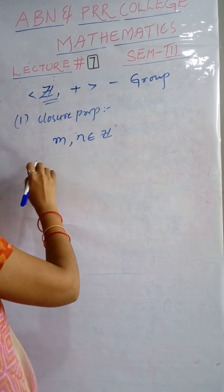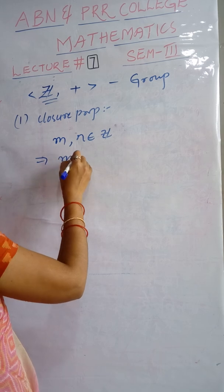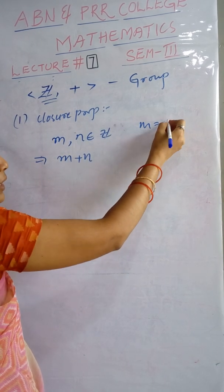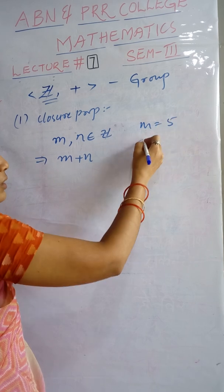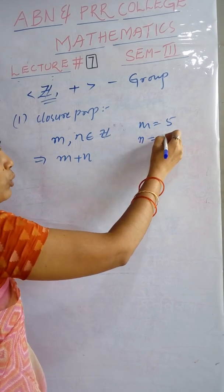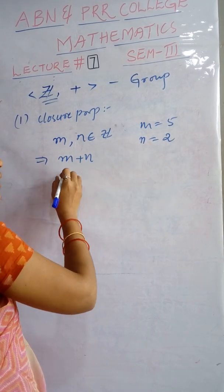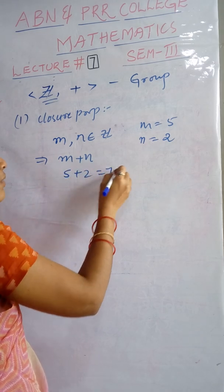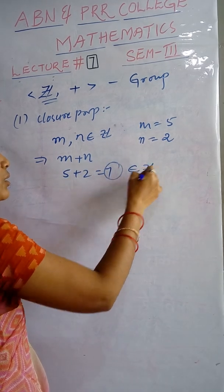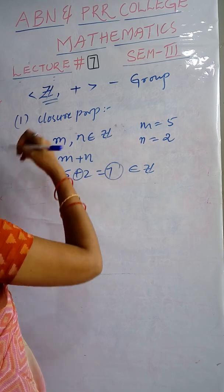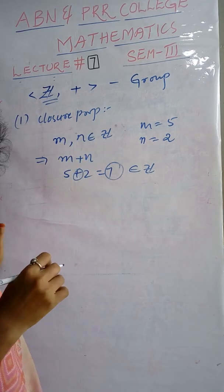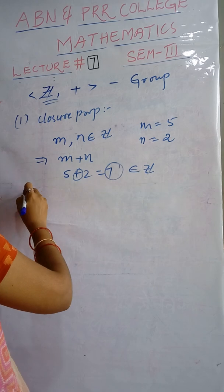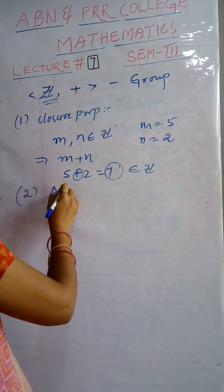Then m + n: suppose m = 5 and n = 2, then m + n = 5 + 2 = 7, and 7 is again an integer. So addition is closed in the set of integers. Closure property is satisfied. The second property is the associative property.